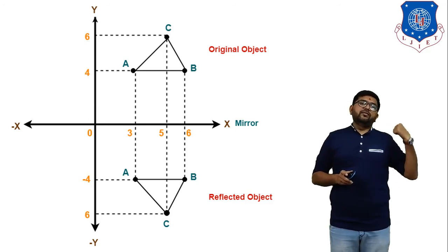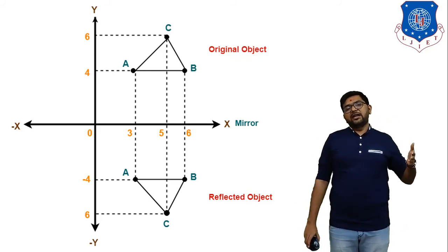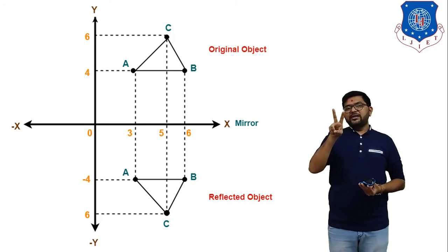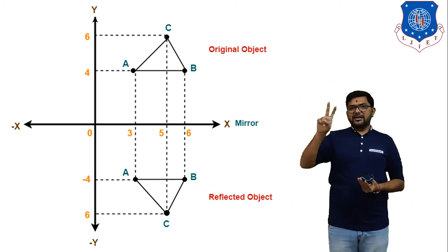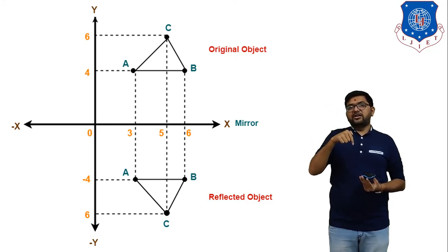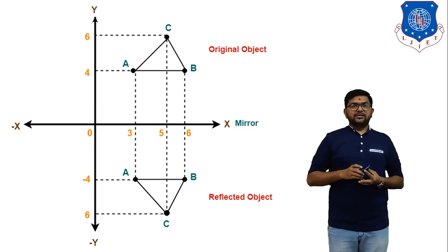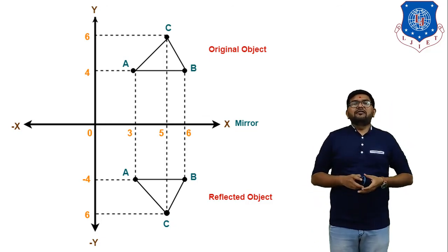In today's session we discussed reflection geometric transformation. So now total 4 types of transformation have been completed: first, translation — moving any object from one place to another; second, rotation — rotating any object clockwise or anti-clockwise; third, scaling — enlarging or reducing any object; and fourth, reflection — finding the mirror image of any object about the x-axis or y-axis. Only one transformation remains, that is shearing, and that topic we will discuss in our next lecture. See you next time. Bye.